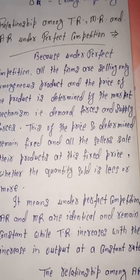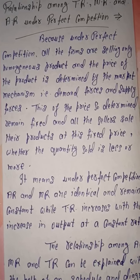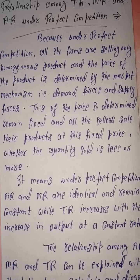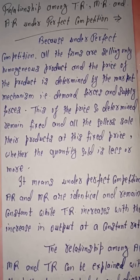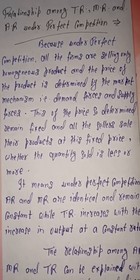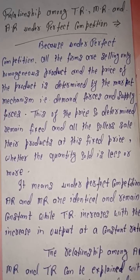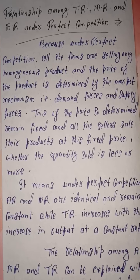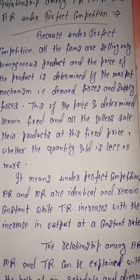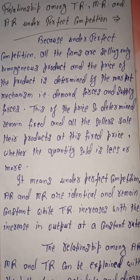In perfect competition, as we know, there are a large number of buyers and a large number of sellers, and all sellers are selling a homogeneous product — an identical product with no differentiation of any kind. Because the product is homogeneous, the price is not determined by the sellers. Rather, the market mechanism decides it — based on the demand forces and supply forces of the market. All sellers sell their product at this particular price; no one can sell above or below this price. Whether they sell more or less quantity, the price remains fixed and constant.